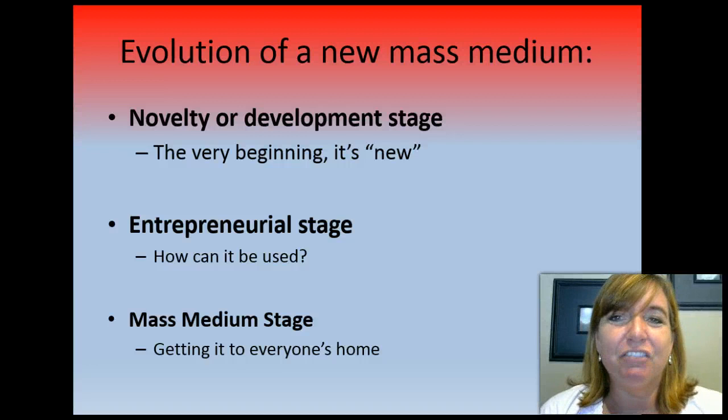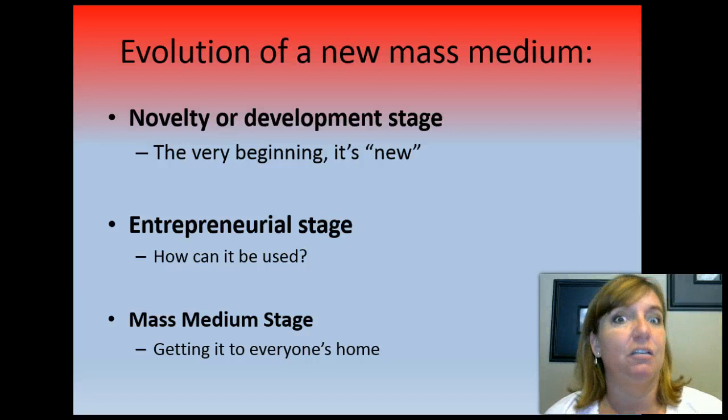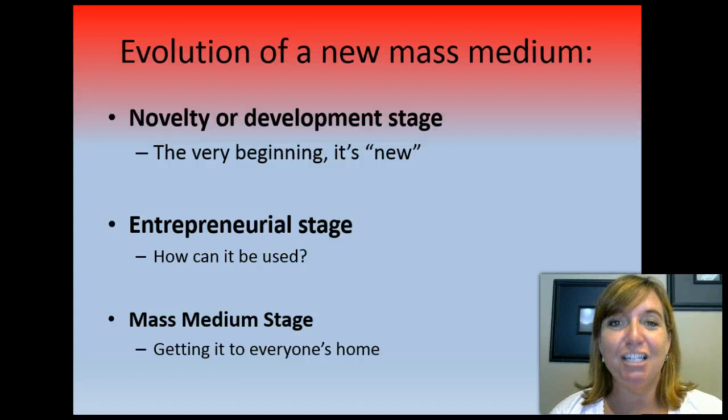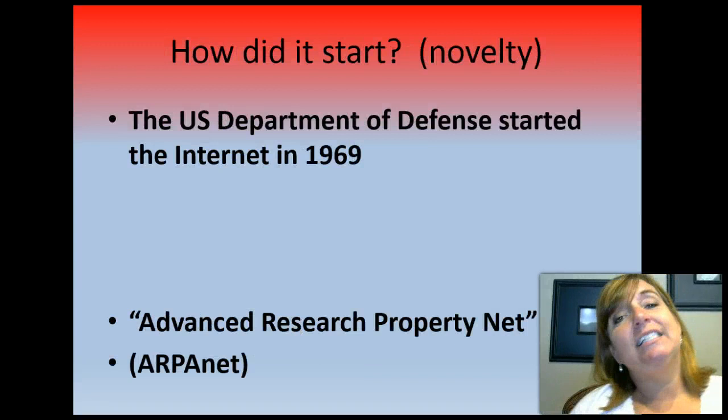A couple of terms I want you to know about the evolution of a new medium: there's the novelty stage, the entrepreneurial stage, and the mass medium stage. Right now the internet is in the mass medium stage, but when it started it was in the novelty stage — just like everything else — where it's very new and only the early adopters have it. The entrepreneurial stage is when people try to figure out how it can be used and how to make money from it. But now we're in the mass medium stage where almost everyone has access. Every medium goes through these stages of evolution when they first come out.